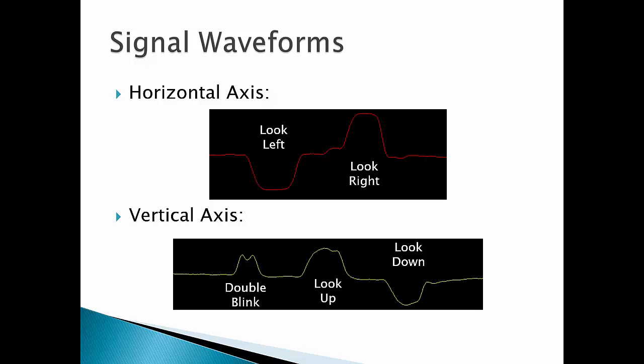Once we have the signal into LabVIEW, we need to determine what the user is doing. If they're looking left, looking right, blinking, looking up or down. On the horizontal axis, the signal looks like a negative pulse when the user looks left. When the user looks right, we have a positive pulse.